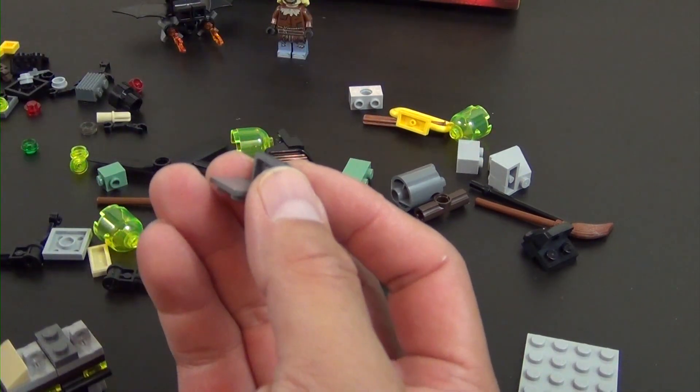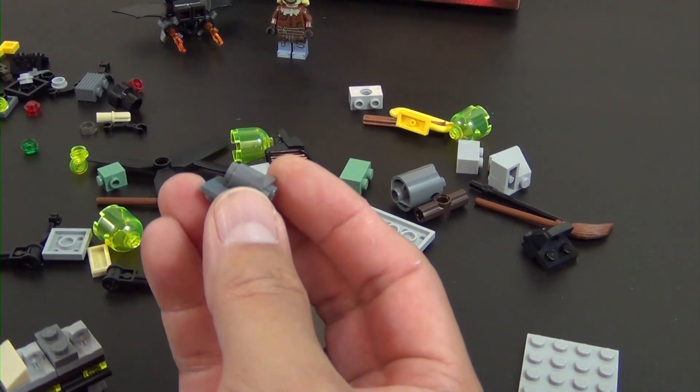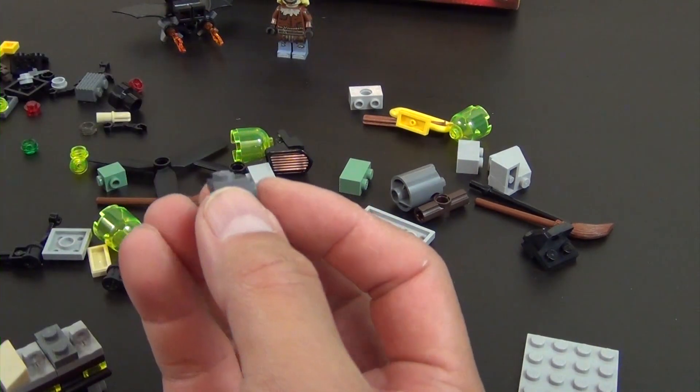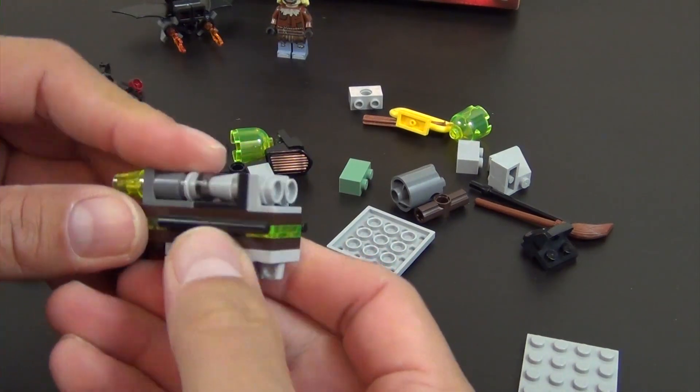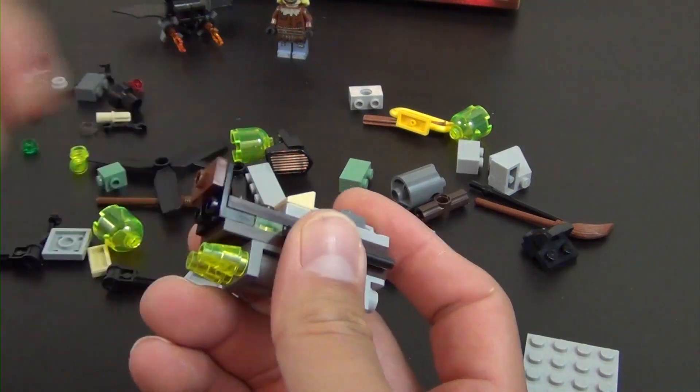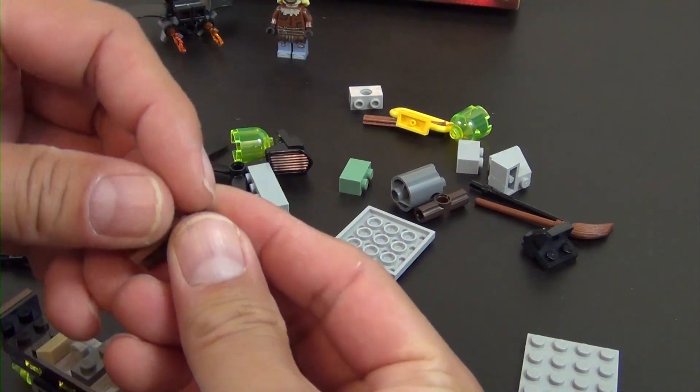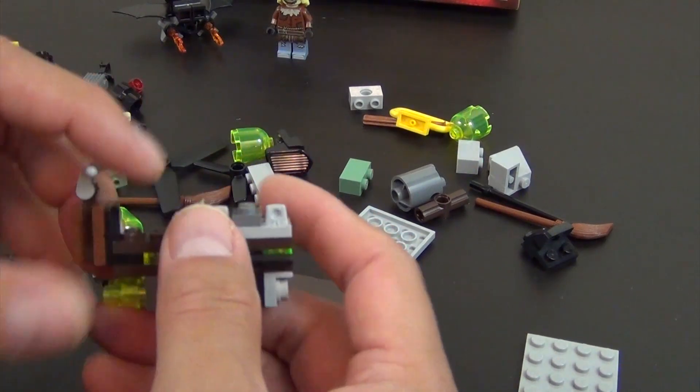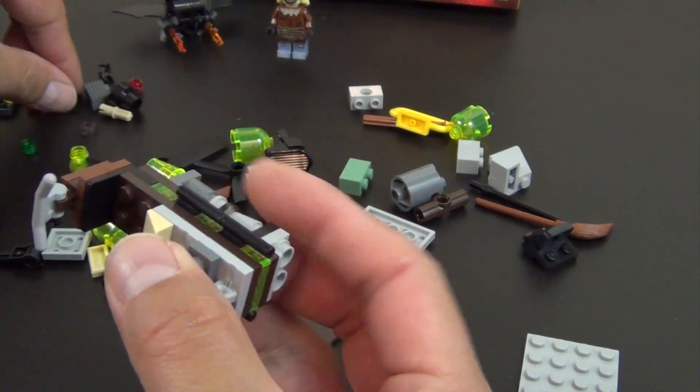All right, so this will go on the underside like that. Another bracket, a couple round bricks. And the trans fluorescent yellow piece like that, and this goes here. So we turn it back around, we have our jumper tiles. Now we have a plate with a clip.